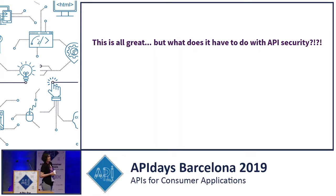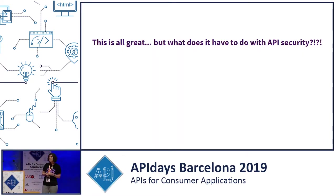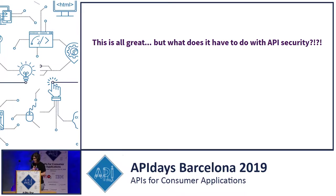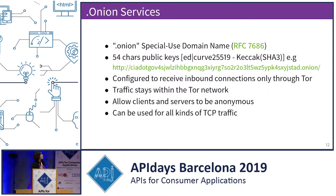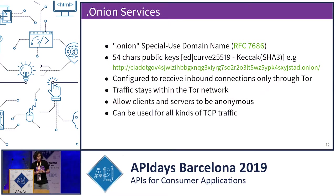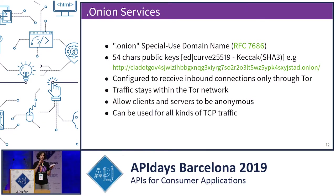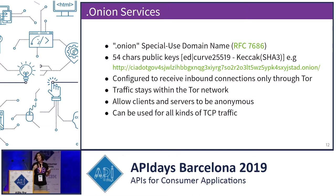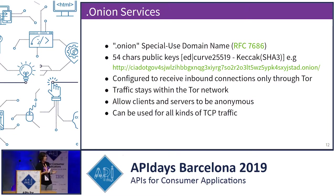At this point you may be thinking: this is all great, but I'm not really interested in anonymity — what does this have to do with API security? Well, I'm going to show you. We have this special thing in Tor called Onion Services. Before we looked at Tor traffic going from within the Tor network out to the internet, but what if the traffic was kept inside the Tor network? And that's basically what Onion Services are.